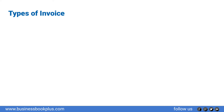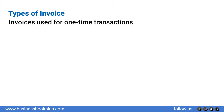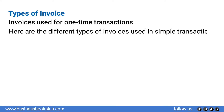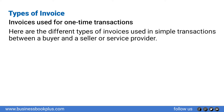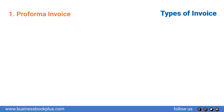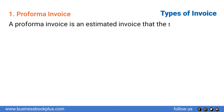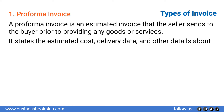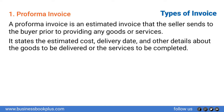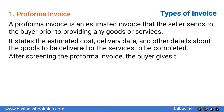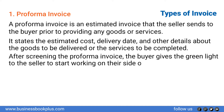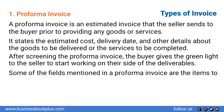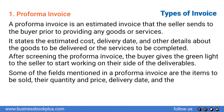Types of invoices used for one-time transactions. Number one, pro forma invoice: a pro forma invoice is an estimated invoice that the seller sends to the buyer prior to providing any goods or services. It states the estimated cost, delivery date, and other details about the goods to be delivered or services to be completed. After reviewing the pro forma invoice, the buyer gives the green light to the seller to start working on the deliverables. Fields included are items to be sold, their quantity and price, delivery date, and shipping address.